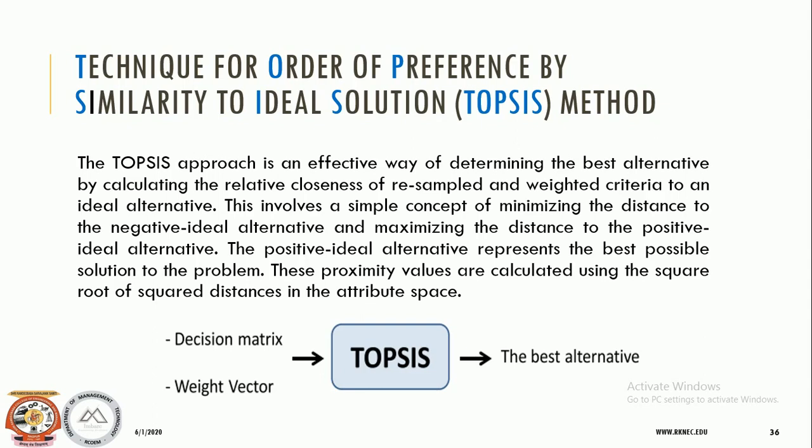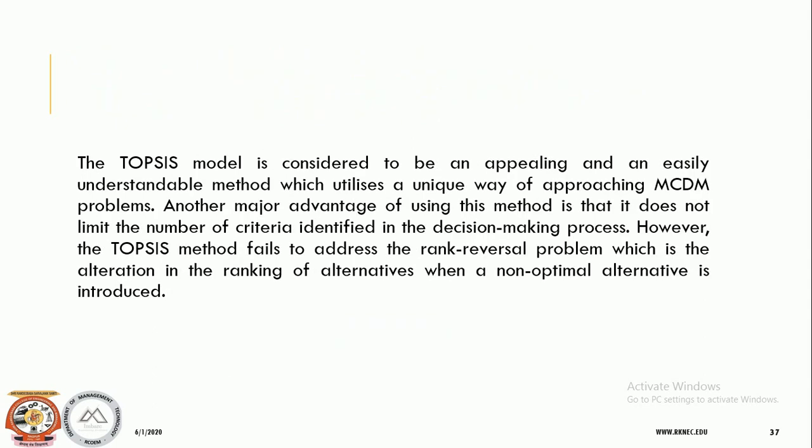TOPSIS is a method of compensatory aggregation that compresses a set of alternatives by identifying weights for each criterion, normalizing scores for each criterion, and calculating the geometric distance between each alternative and the ideal alternative — which is the best score in each criterion. This is a compensatory method that allows trade-offs between criteria, where a poor result in one criterion can be negated by a good result in another, providing a more realistic form of modeling than non-compensatory methods.